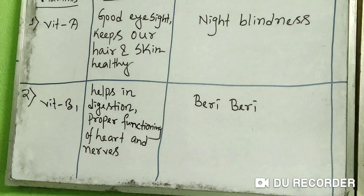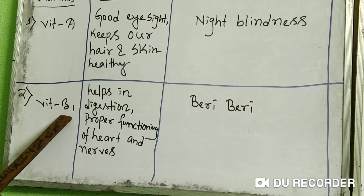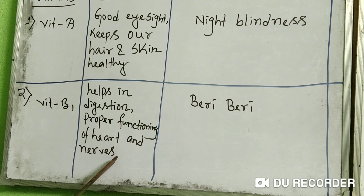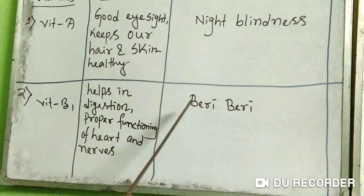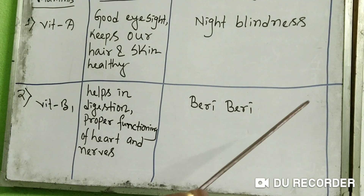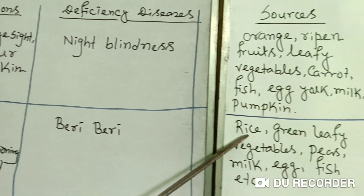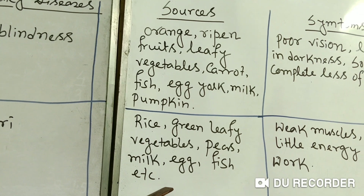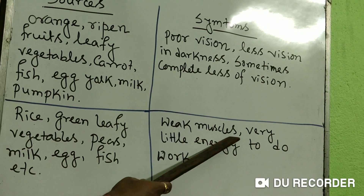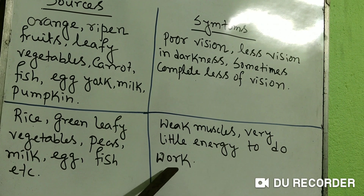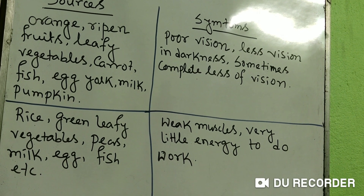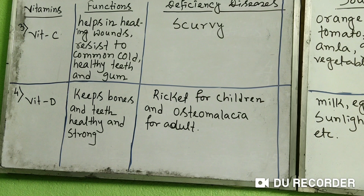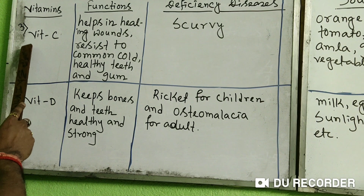To repeat Vitamin B1: functions are help in digestion and proper functioning of heart and nerves. Deficiency disease is Beriberi, and symptoms include weak muscles and very little energy to do work.